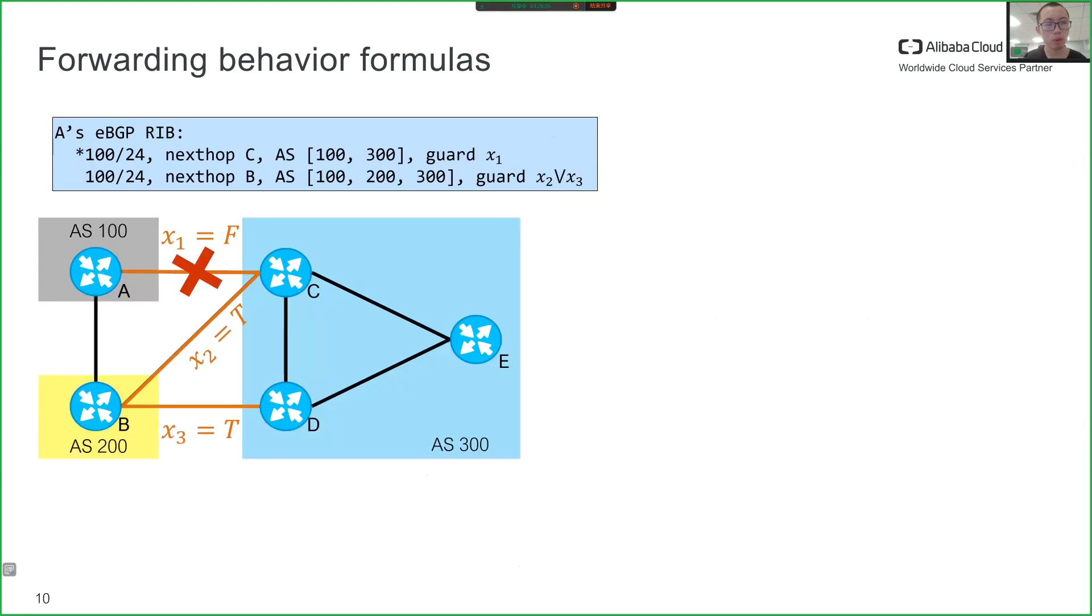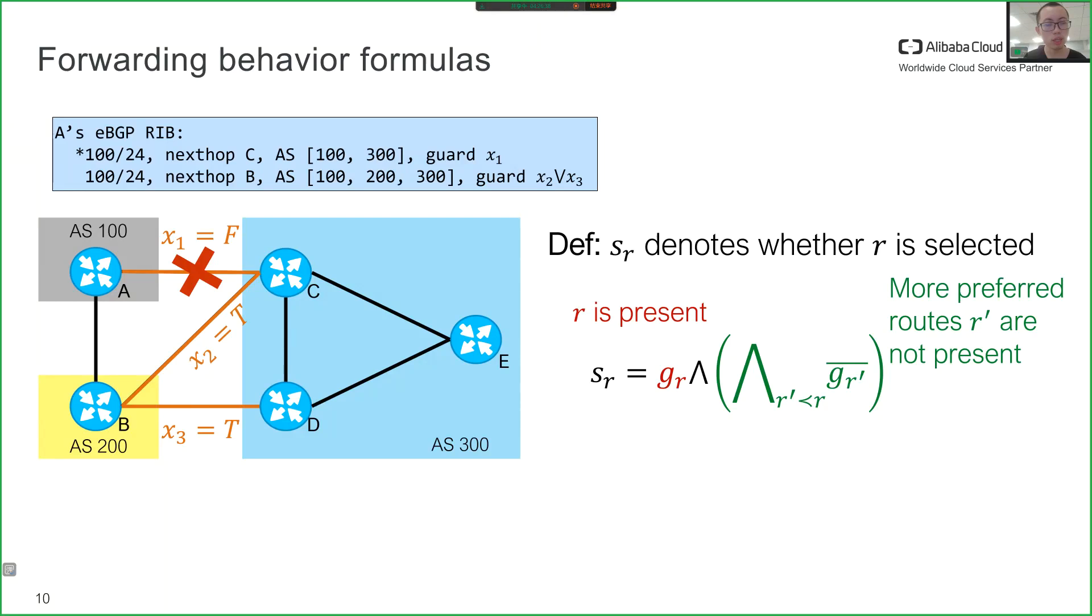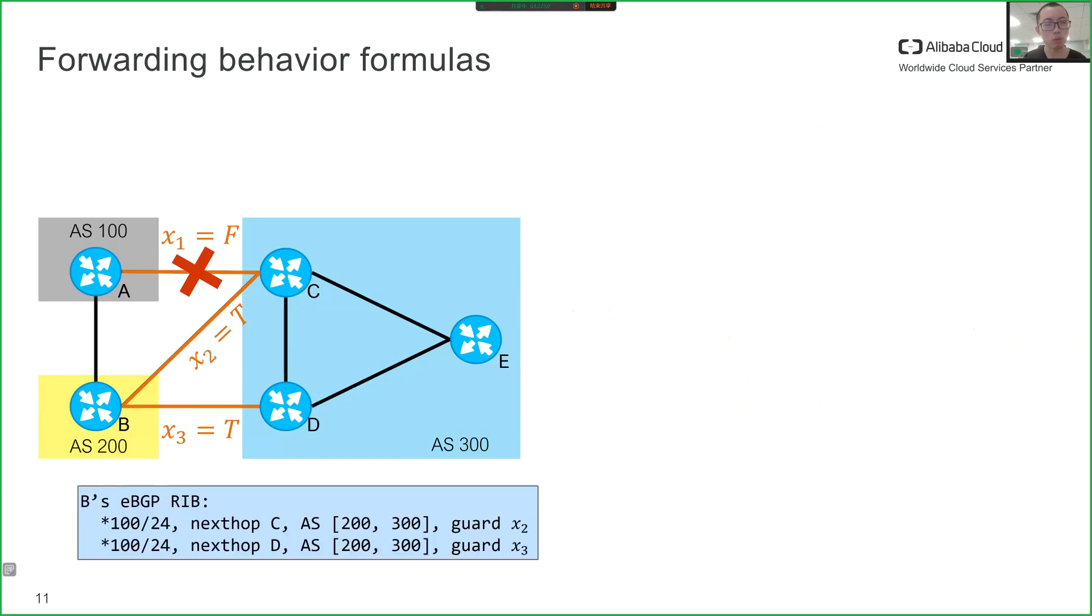For modeling route selection, we use SR to denote whether R is selected. This SR can be computed from route guards. The first part ensures that R itself is present, and the second part ensures that the more preferred routes are not present. We refer to the two routes at router A as R1 and R2. We next see X2 or X3 and not SR1 as an example. Here, X2 or X3 means that the second route itself is present, and not SR1 means that the first route is not present.